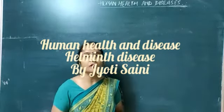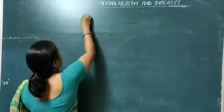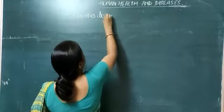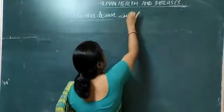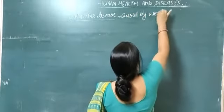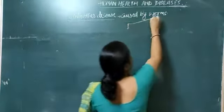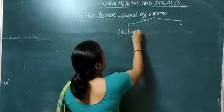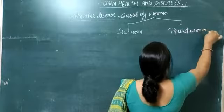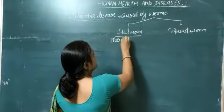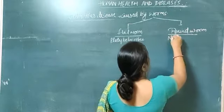In this video, we will study about Helminthic Disorders. Helminth diseases are generally caused by worms. These worms are of two types: Flat Worms and Round Worms. Flat Worms belong to the group Flat Helminth, and Round Worms belong to the group Nematoda.